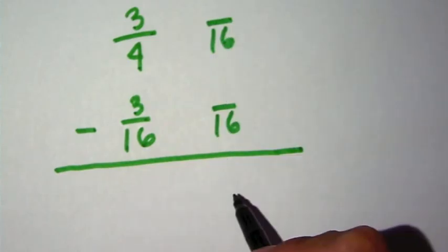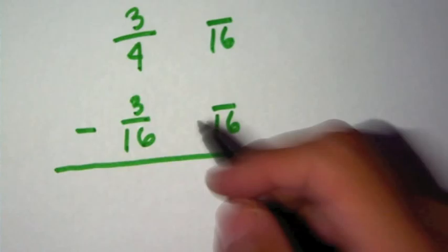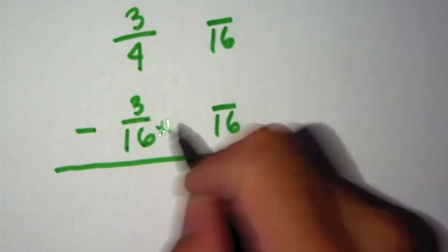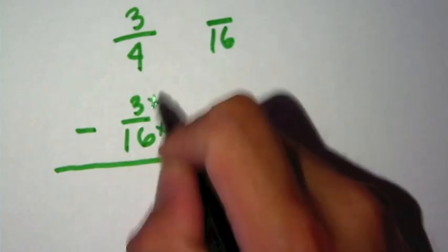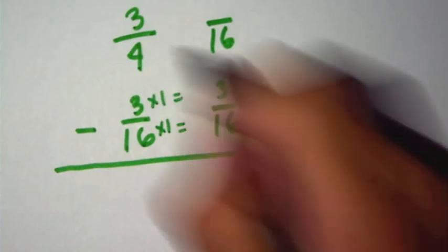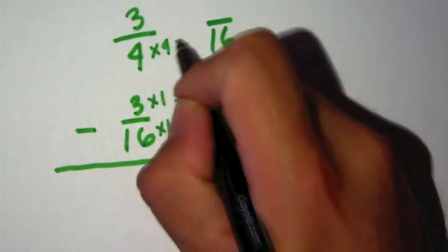So 16 times 1 equals 16, 3 times 1 equals 3. 4 times 4 equals 16, 3 times 4 equals 12.